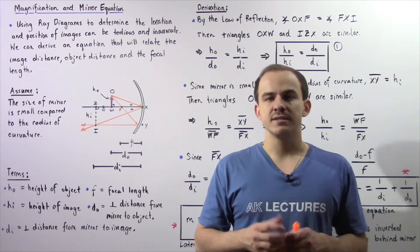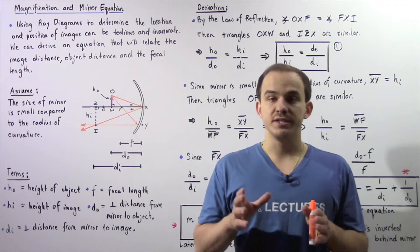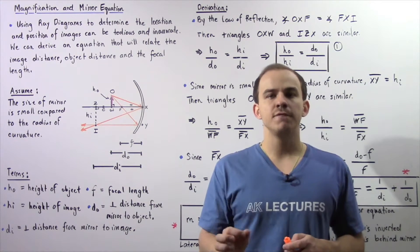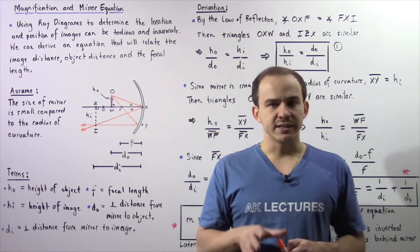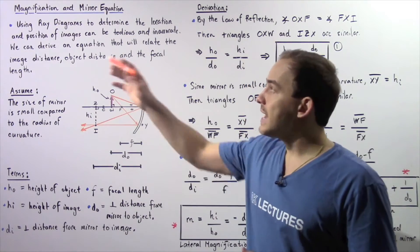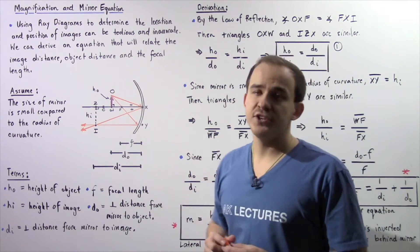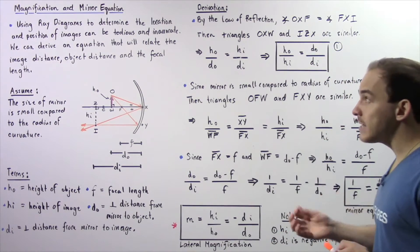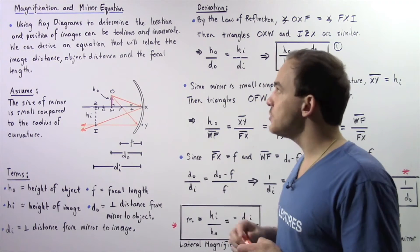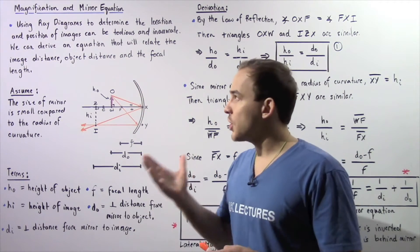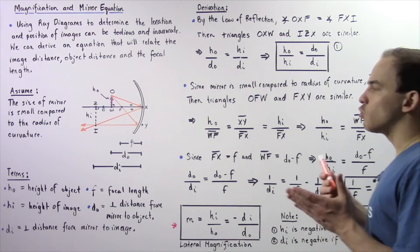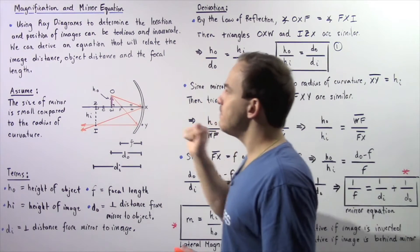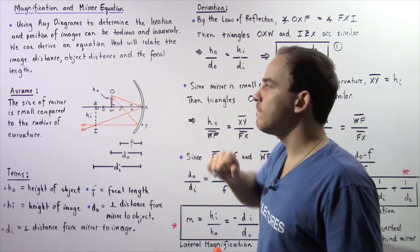In the previous lecture, we discussed a concept known as ray diagrams. We said that we can use ray diagrams to help us determine the location and position of our image relative to our object for concave and convex spherical mirrors. However, using ray diagrams can be very tedious, difficult, and even inaccurate. Instead, we can use an equation known as the mirror equation to help us determine the position and location of our image relative to our object. We can derive the mirror equation that will relate the image distance, the object distance, as well as the focal length.